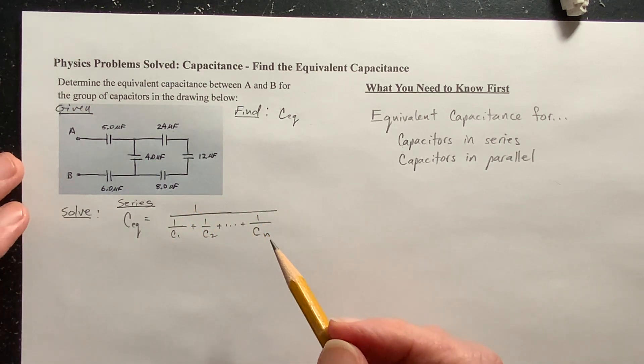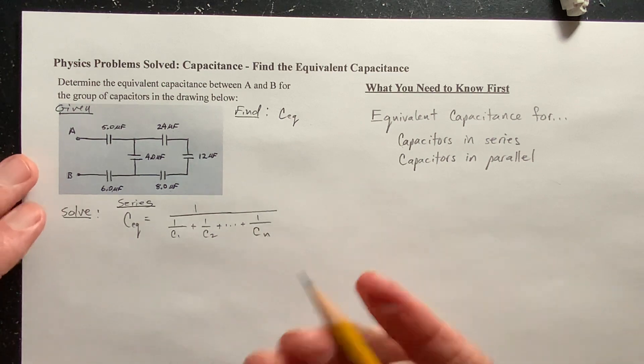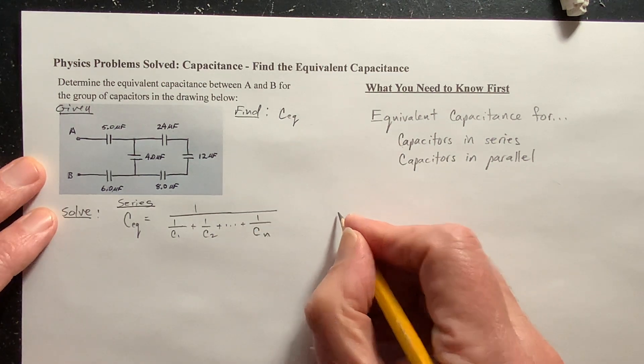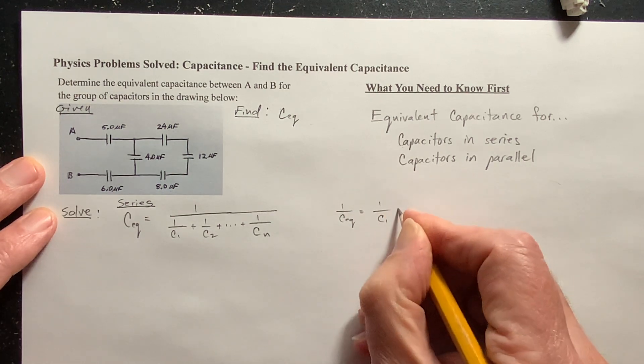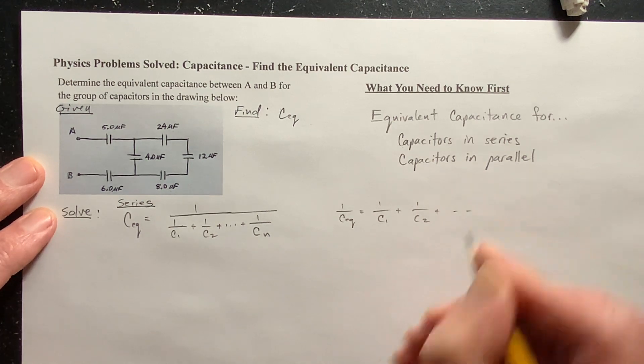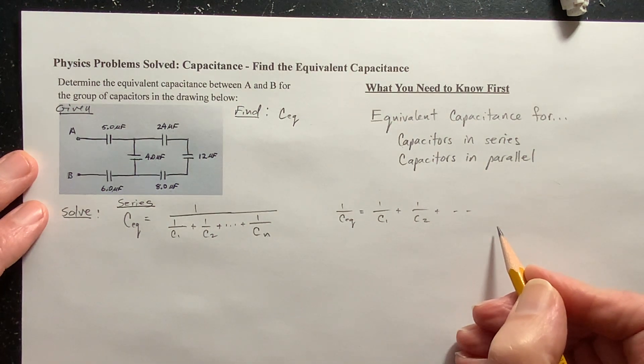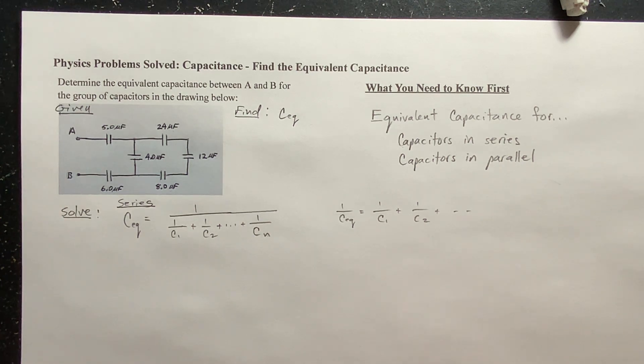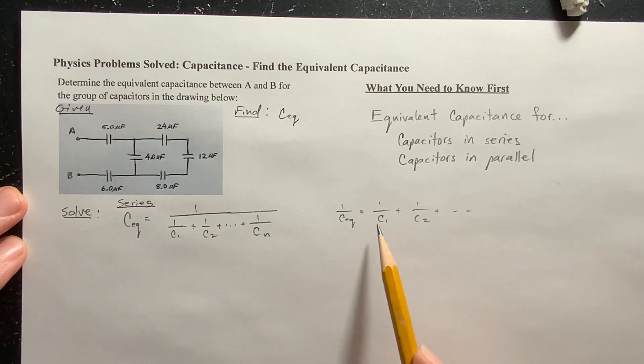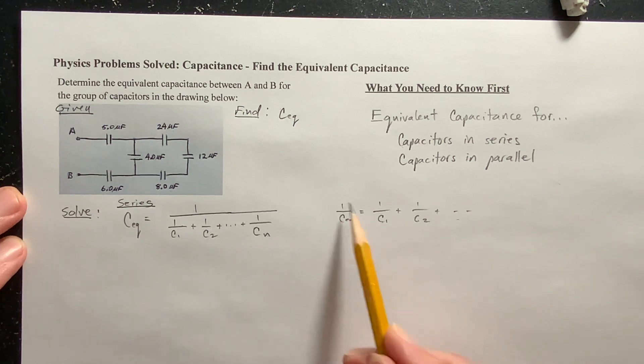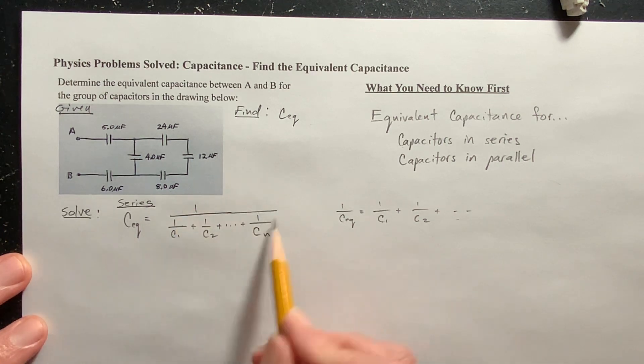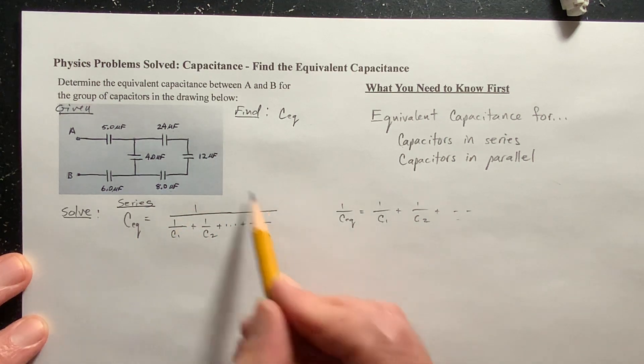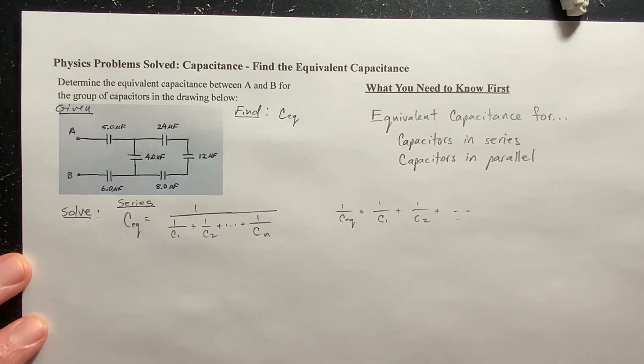You quite often will see it written like this, which isn't wrong at all. You have 1 over the equivalent capacitor is equal to 1 over C1, plus 1 over C2, plus dot, dot, dot. And that's fine, but I like, I used to be a physics teacher before I retired, and I would have students that would forget to reciprocate, because if you add the reciprocals, you get the reciprocal of the equivalent capacitance. You don't get the equivalent capacitance. So, just by writing it like this, I'm kind of reminding you, hey, do this, and then reciprocate to get your answer here.